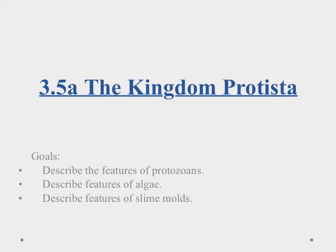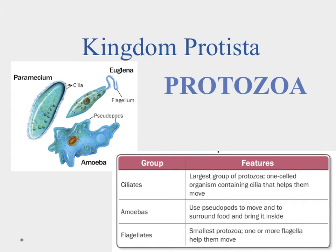Aloha and welcome to our video on the kingdom Protista. In this video we'll talk about the protozoans, algae, and slime molds. In this kingdom we are now in the eukaryote, so we have eukaryotic cells, which means we have a nucleus and internal structures called organelles. The first group are the protozoans. 'Proto' means original or precursor, and 'zoa' refers to animals, so these are going to be our animal-like protists.